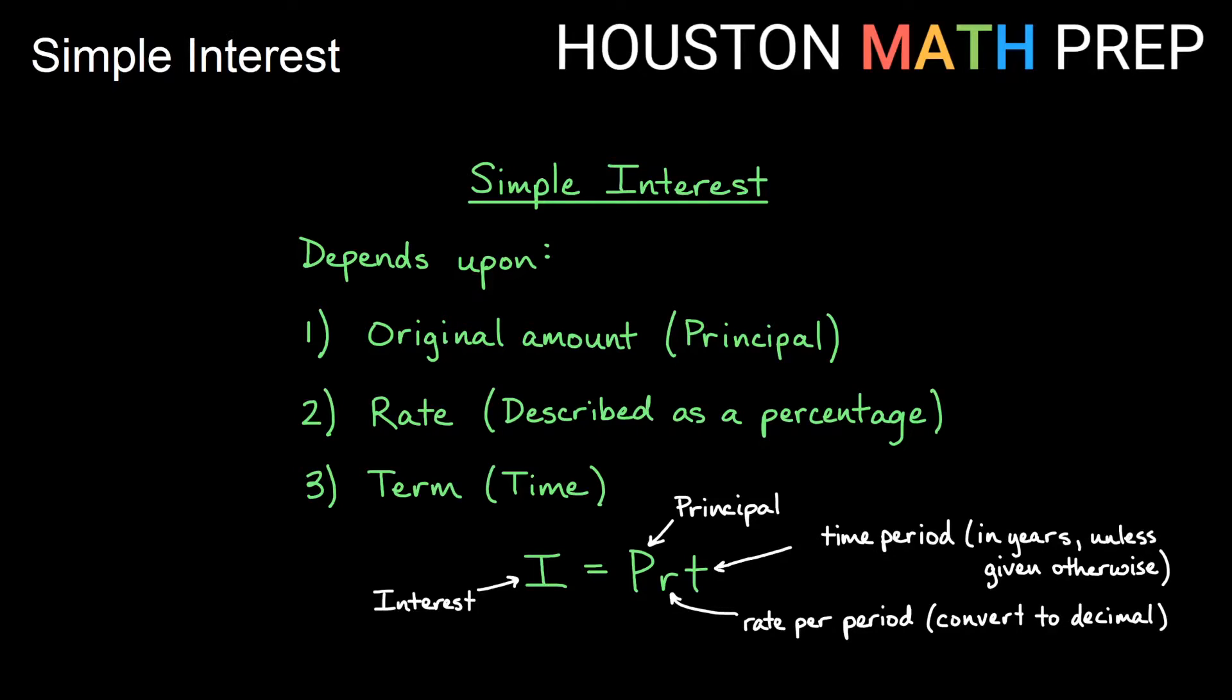So I is our interest, P is our principal, R in the formula is our rate per period and usually we'll convert that to a decimal, unless we conveniently happen to be working with a calculator that has a percent button. And T is the time period. Usually that's given in years unless it's specified otherwise in the statement of the loan or in the problem that we're working on.